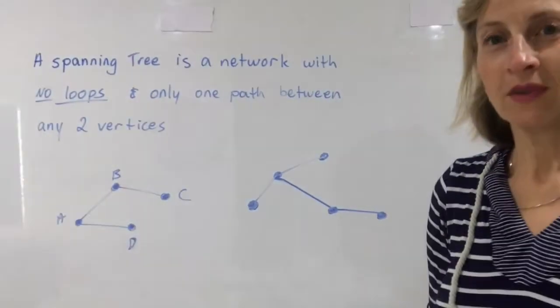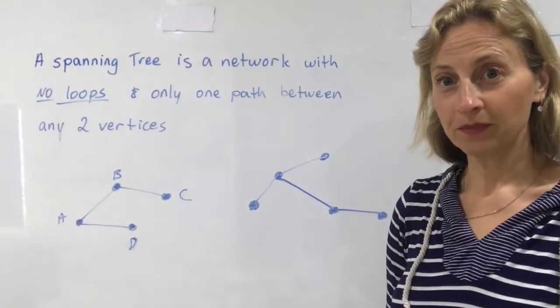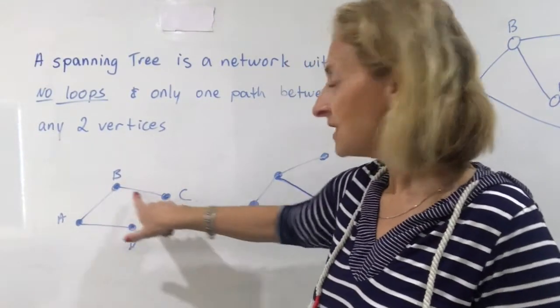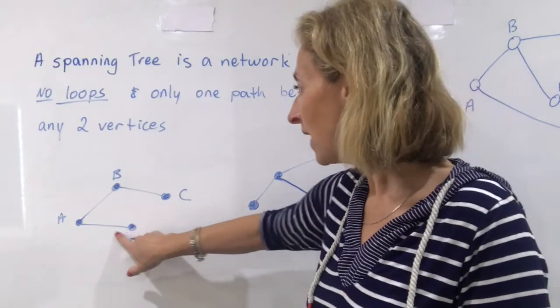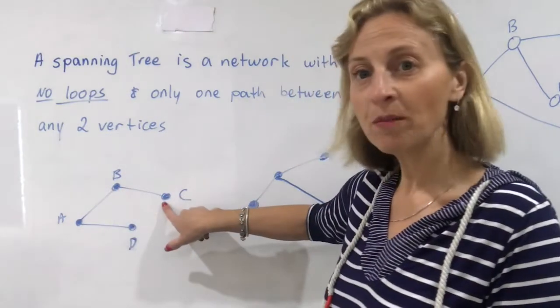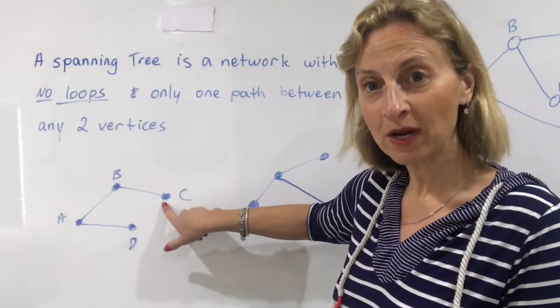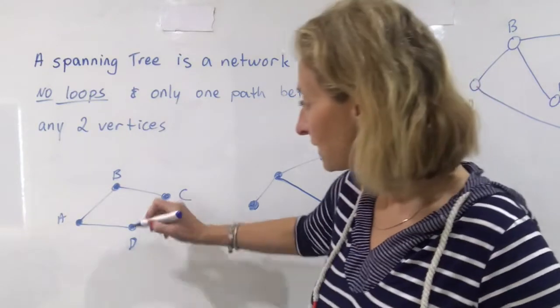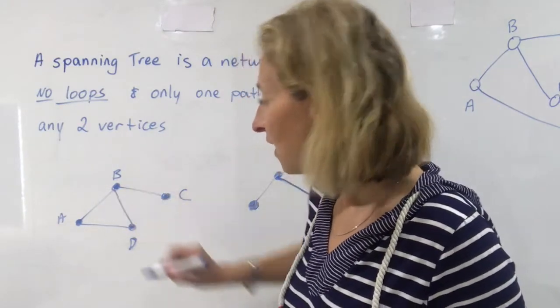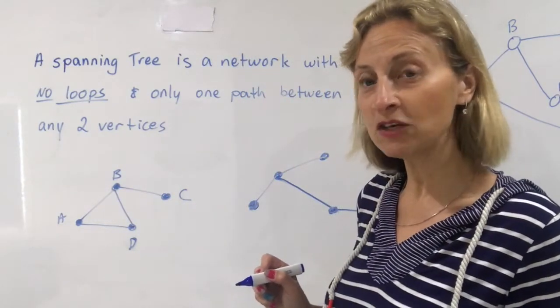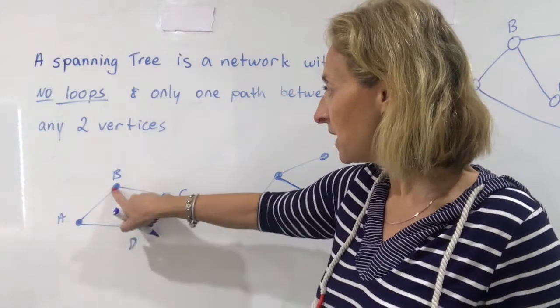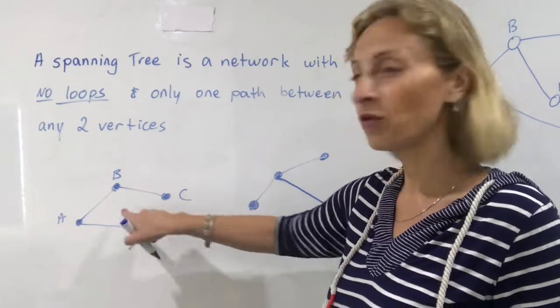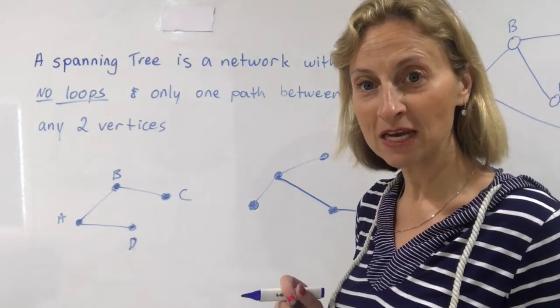Let's have a look. So just to clarify, a spanning tree has our vertices but there is only one way to get from every vertex to the next one. You don't have two options, you only have one. If I for example put in a line here that would no longer be a spanning tree because to get from D to B I would have more than one option. So it's not allowed to be there for this network to be a spanning tree.